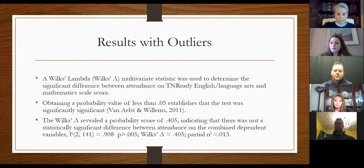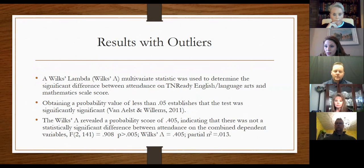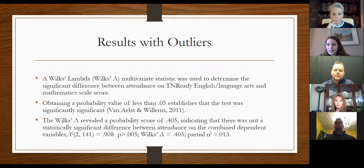The Wilks' Lambda is the multivariate statistic used to determine if there was a significant difference between the Tennessee Ready ELA and math scale scores and attendance. You look for a value less than 0.05, and the result was 0.405 — so it was not statistically significant. There was not a statistically significant difference between those groups.